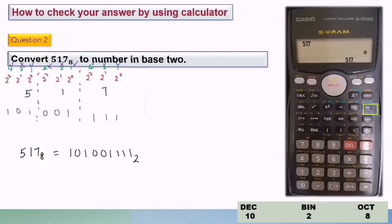So now we want to convert 5, 1, 7, base 8 to number in base 2. So base 2 is binary. So which button? Here, right? So press this button. Press this button binary. We will obtain the answer in base 2. So the answer is 1, 0, 1, 0, 0, 1, 1, 1, base 2.